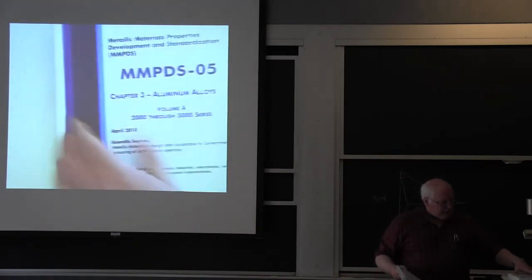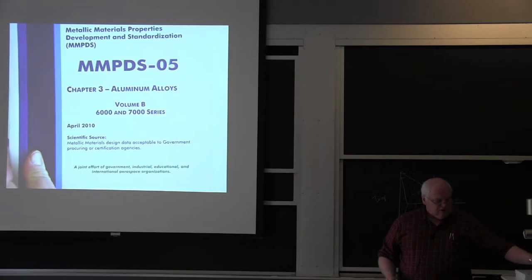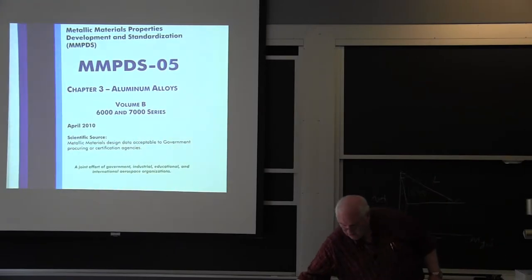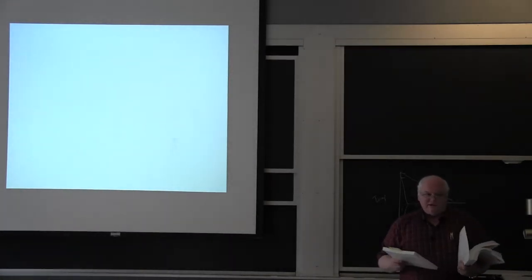Chapter 3 comes in volume A, which is aluminum alloys 2000 and 5000 series, and volume B, which is 6000 and 7000 series. Compare the thickness of steel versus the thickness of aluminum. Here's one case where there's a lot more data on aluminum than is on steel. Why? Because this is aircraft. We don't build a lot of steel aircraft. We do build some frames and there's landing gears and other things that go in here.